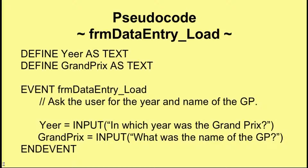We define 'year' as text — you'll notice it's spelt with two e's, because 'year' is sometimes a reserved programming command in some languages, so it's purposefully misspelt, one of those tricks of the trade. And year is defined as text, not integer, because we're not doing any arithmetic with it — we're going to use it as part of a file name. We also define 'Grand Prix' as text. That information, when entered, will be visible to all events because it's defined outside any particular one.